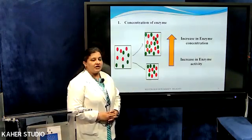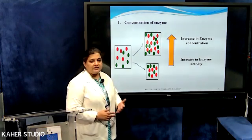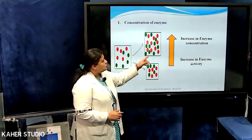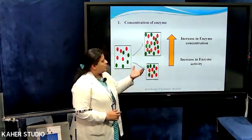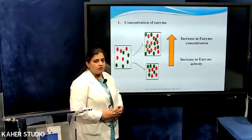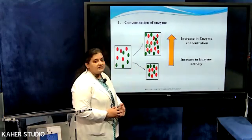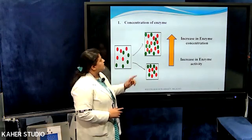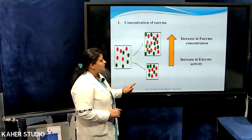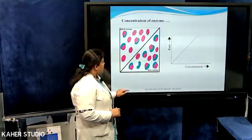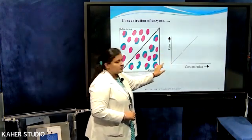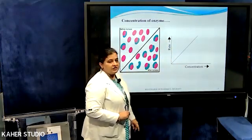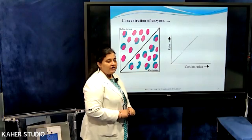The first factor is concentration of enzymes. Enzymes react with the substrate to form an enzyme-substrate complex, and a product is formed so that a free enzyme is released. Whenever there is an increase in the concentration of enzyme, it will increase the enzyme activity. The number of enzymes is directly proportional to the number of substrate molecules. If the number of enzymes is more, there will be an increase in enzyme activity, and the substrates will come and bind with the active site of the enzymes. Increase in the concentration of enzymes increases the enzyme activity or enzyme velocity.